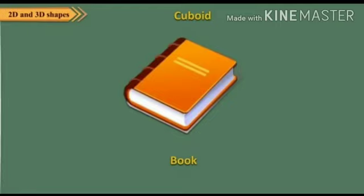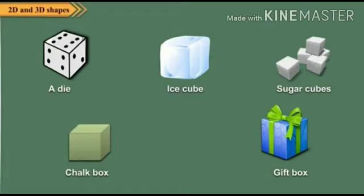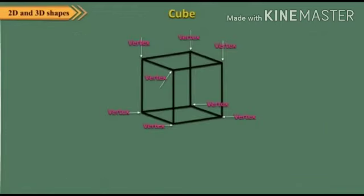Now look at the shape of a cube. These shapes all show the shape of a cube. A cube has 12 edges and 6 faces.